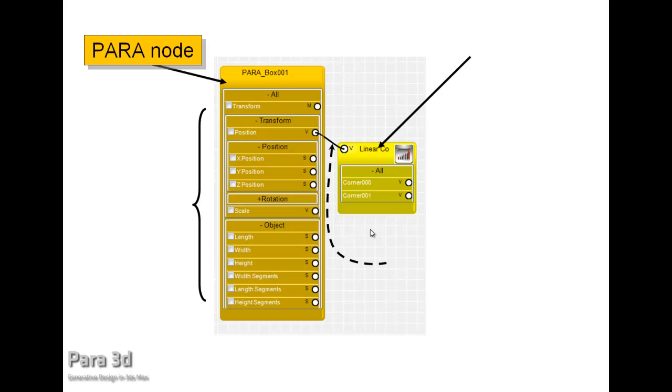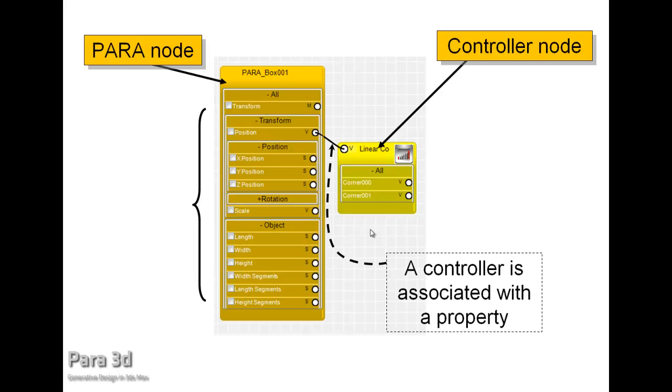Now here we take a look at a simple example of Para3D structure that includes a Para3D node which is representing the object property, and the controller that controls one of the properties of the objects. In this example on the left side we have Paranode, which is showing the list of properties that is available to Para3D from a single box, and a controller that is going to control the value of the position.